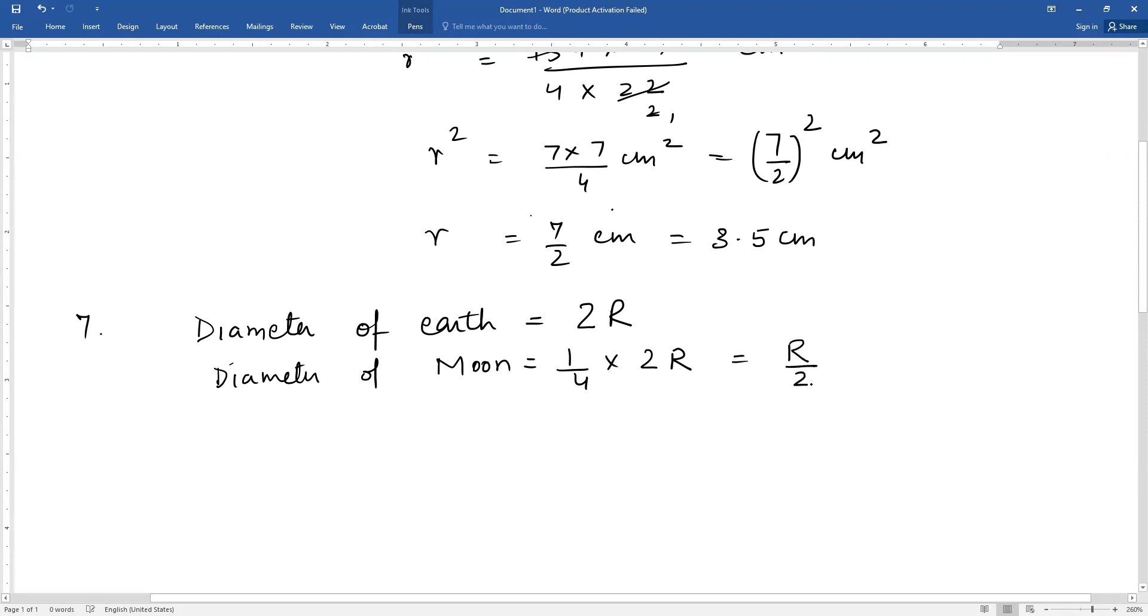This gives you R upon 2. Now radius of earth is half the diameter, this gives you R. And radius of moon: diameter is R by 2, half of that gives you R upon 4.